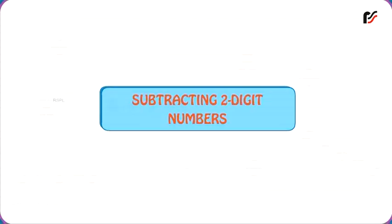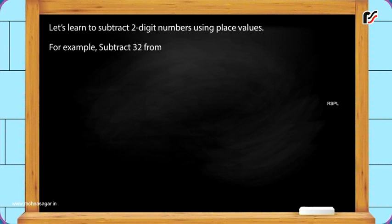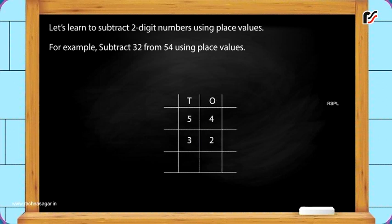Subtracting two-digit numbers. Let us learn to subtract two-digit numbers using place values. For example, subtract 32 from 54 using place values. Find out how many tens and ones are there in these two numbers. Write T and O in the blocks. In 54, there are five tens and four ones. So, write five under the tens column and four under the ones column. In 32, there are three tens and two ones. So, write three under the tens column and two under the ones column.